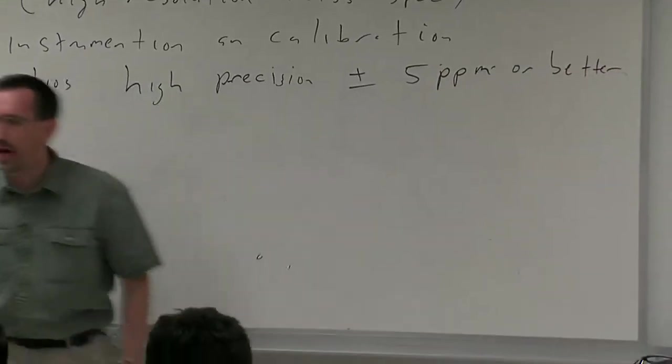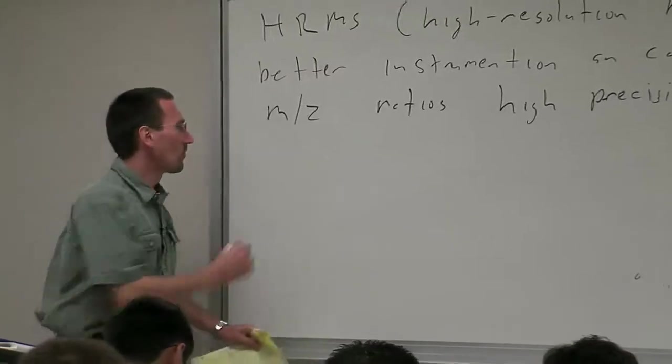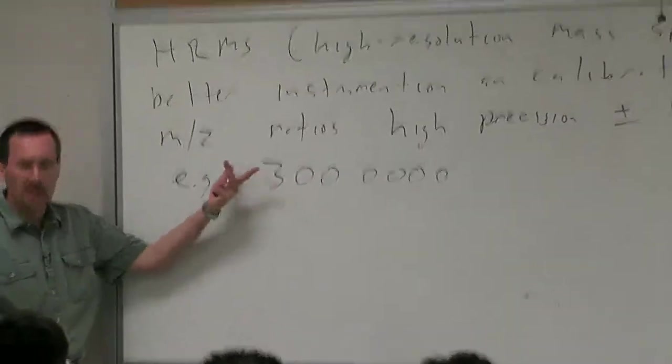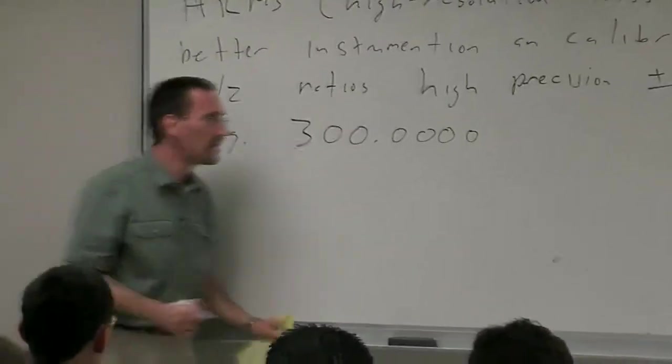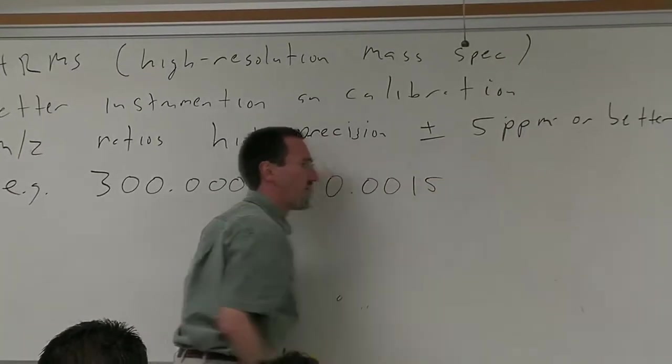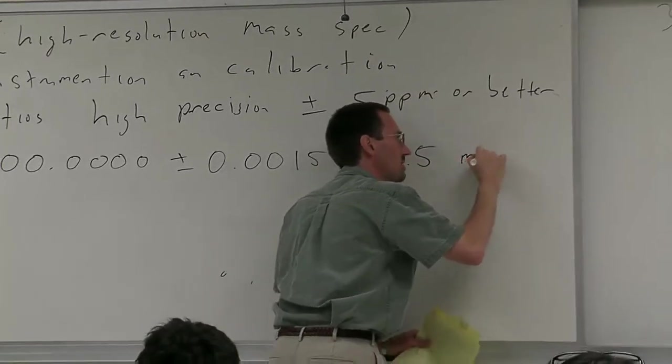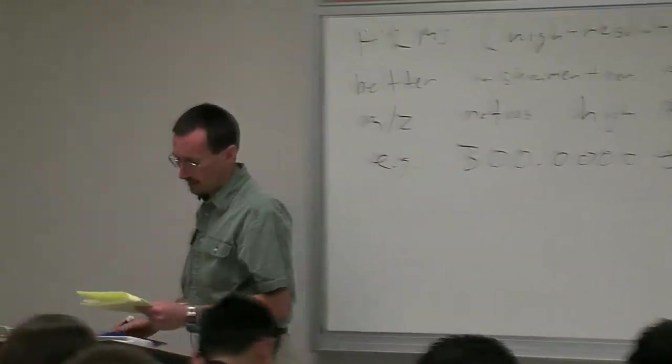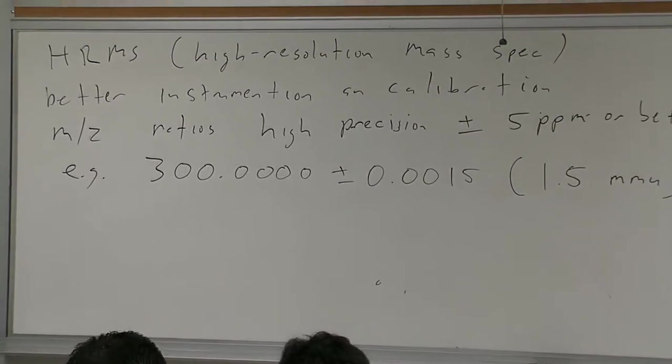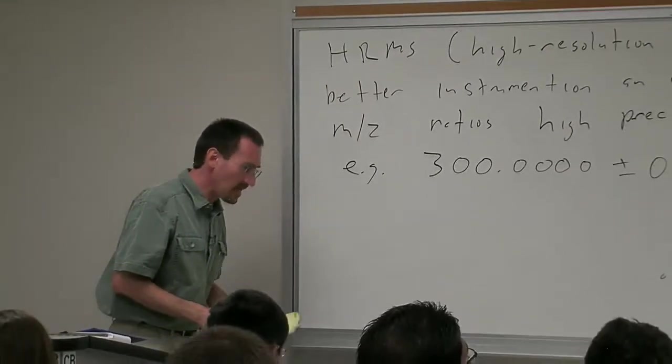In the case of ion cyclotron resonance mass spectrometry sometimes even one order of magnitude better than that. For example, by 5 parts per million I mean if I had a mass of 300.0000, a small molecule like a steroid, we could get that within 5 parts in a million, within 0.0015 or 1.5 millimass units. You can start to distinguish among different species that have nominally the same mass.